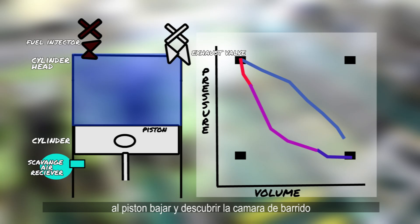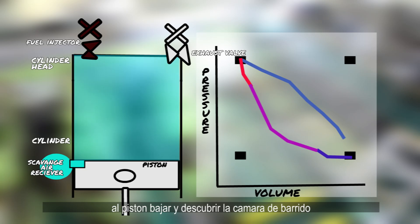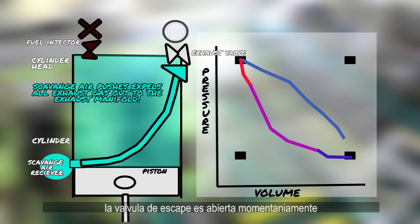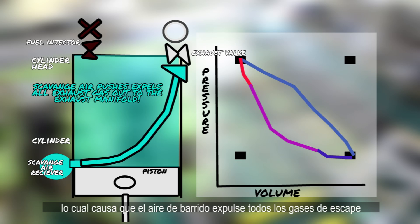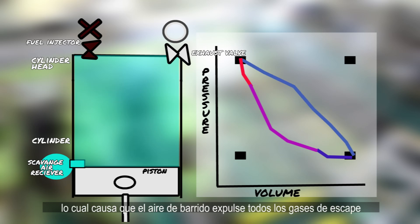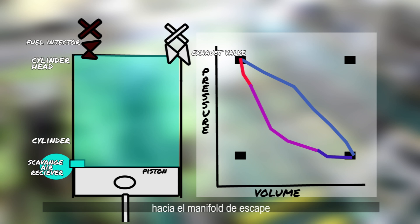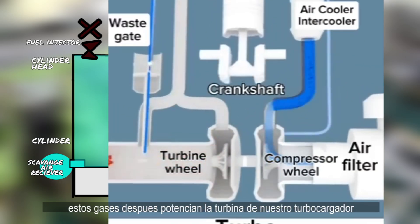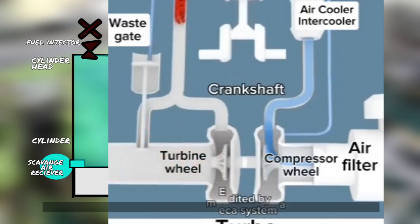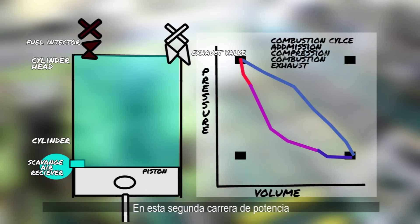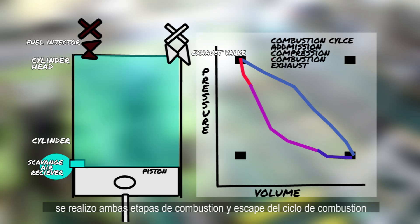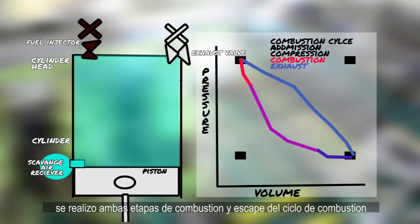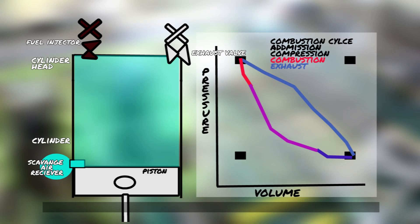As the scavenge air port is uncovered due to the lowered piston, the exhaust valve is briefly opened to expel all exhaust gases, being pushed by the scavenge charge air to our exhaust manifold, which in turn will power the turbine side of our turbocharger. In this second power stroke, we carried out both the combustion and exhaust stages of the combustion cycle, thus completing it in two strokes.